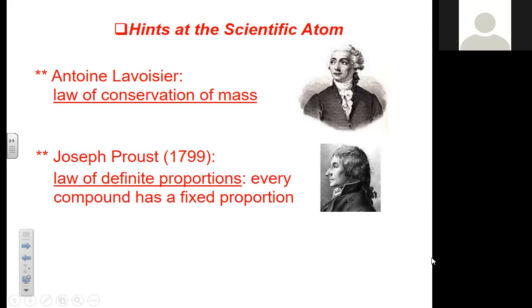Then you had a man named Joseph Proust. He came up with the law of definite proportions. And what that means is every compound has a fixed proportion. H2O. For every O, there are two H's. It's impossible to find a molecule of water that's two H's and 1.5 O's or three H's. You can't have a part of an atom.